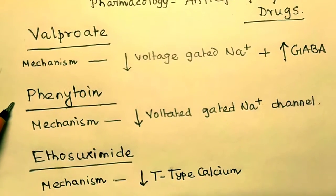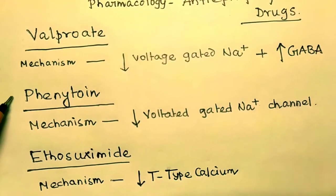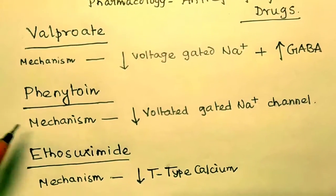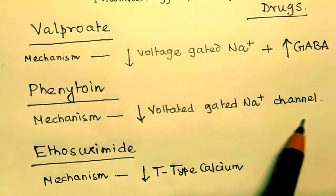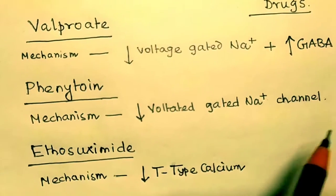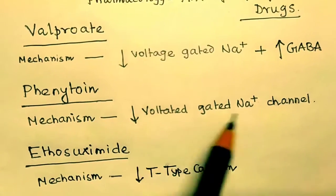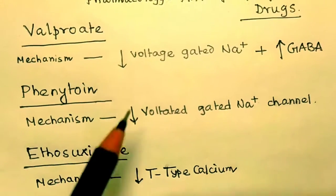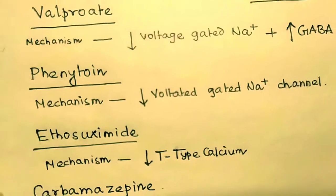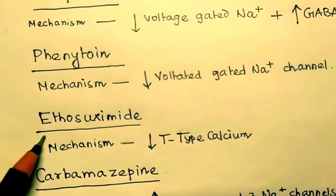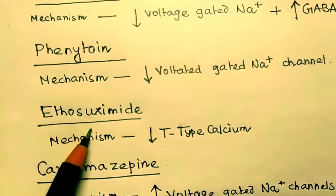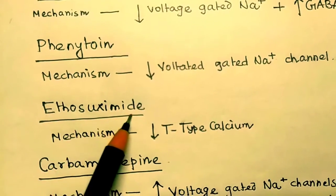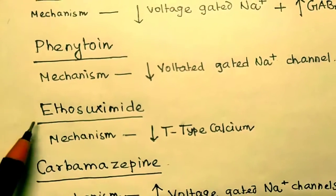The next one is phenytoin. Phenytoin also has the same mechanism — voltage-gated sodium channel decreased. The next one is ethosuximide.